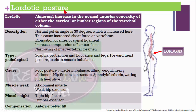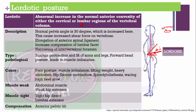Lordotic posture means an abnormal increase in the normal anterior convexity of either the cervical or lumbar regions of the vertebral column — cervical lordosis or lumbar lordosis. Normal pelvic angle is 30 degrees. In lumbar lordosis, this angle increases, causing increased shear force on the vertebra, elongation of the anterior longitudinal ligament, compression of the lumbar fascia, and narrowing of the intervertebral foramen.